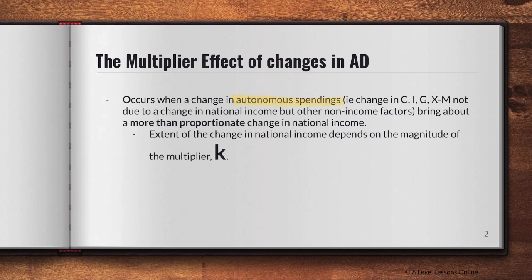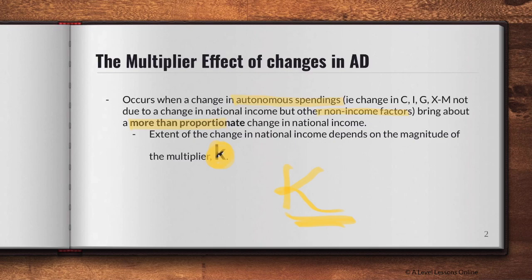The multiplier effect occurs when there's a change in autonomous spending — for example, a change in C, I, G, X, or M — that is not due to a change in national income but other non-income factors. This will bring about a more than proportionate change in national income. The extent of change in national income is hence determined by the magnitude of the multiplier, called k.